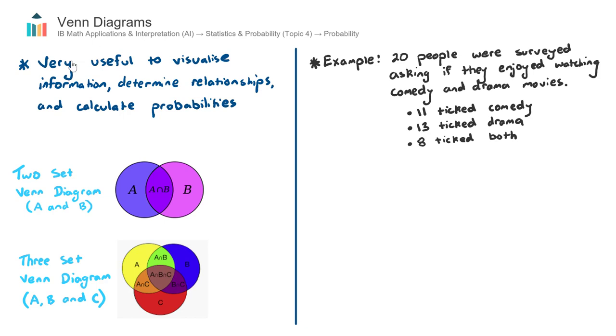Venn Diagrams are very useful to visualize information. So often you'll be given information in text form. But if you translate that onto a Venn Diagram, that's very useful to then determine relationships of information and therefore calculate probabilities.